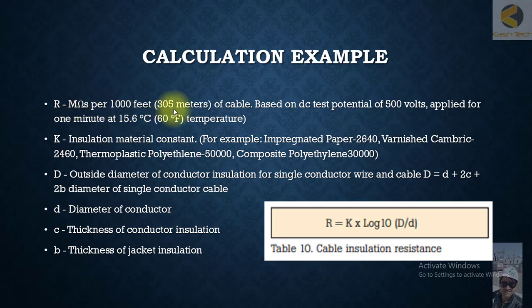Let's see where R is in the formula, megaohms per 1000 feet (305 meters) of cable based on DC test potential of 500 volts supplied for one minute at 15.6 degrees centigrade or 60 degrees Fahrenheit temperature.